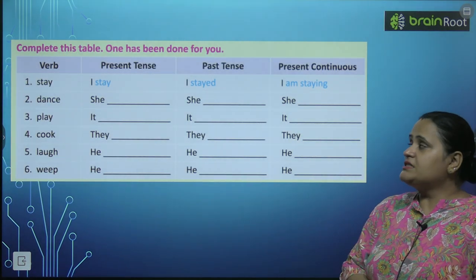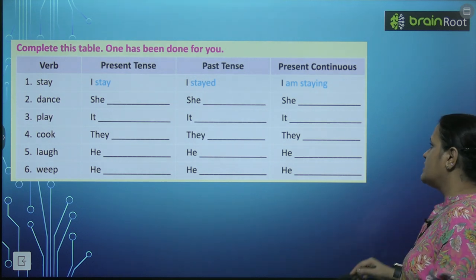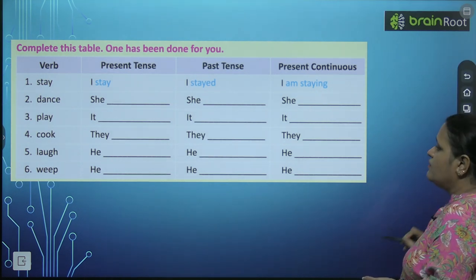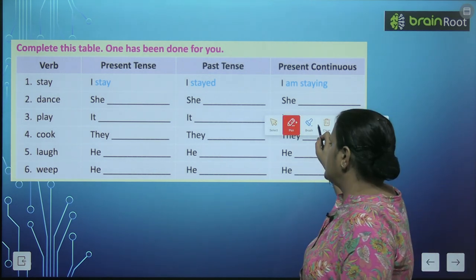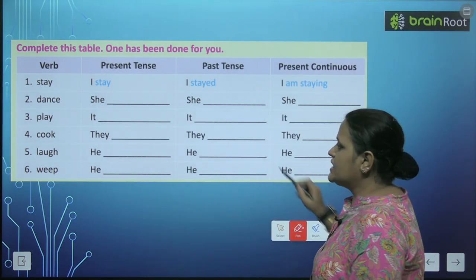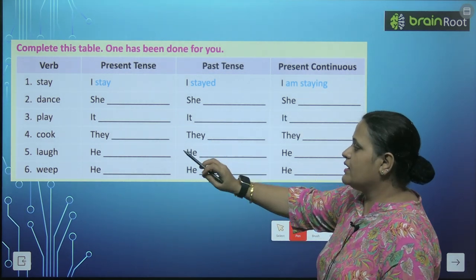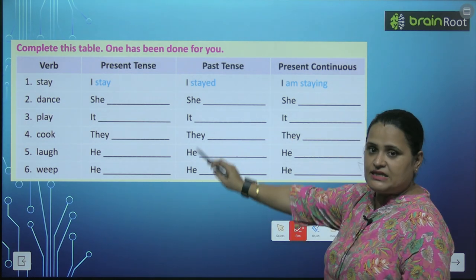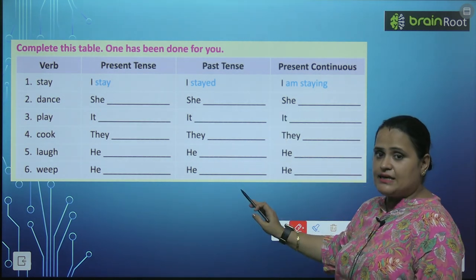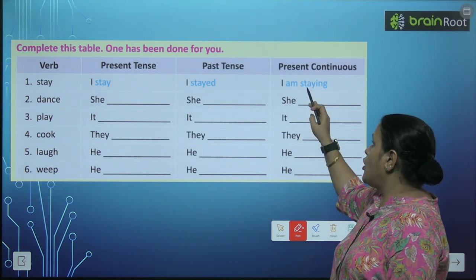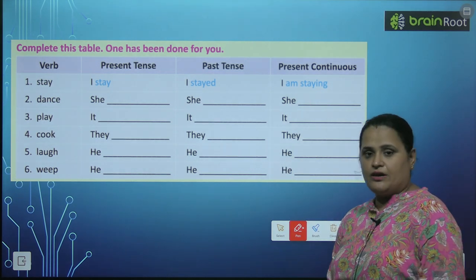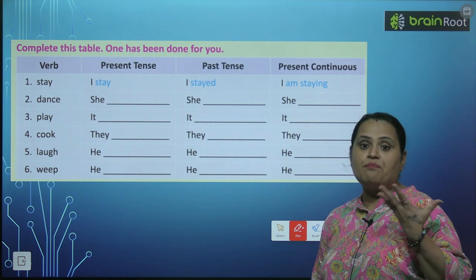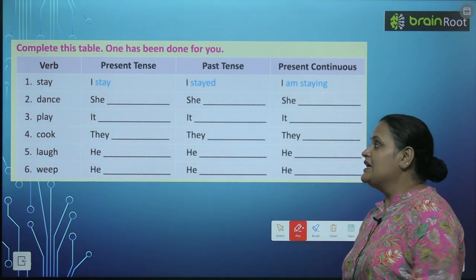Complete this table — one has been done for you. यहाँ पर आपको simple form of verb दी हुई है, जैसे stay, dance, play, cook, laugh, weep. अब हमें इनकी present tense, past tense, और present continuous लिखनी है. आप मेरे साथ साथ बोलेंगे.